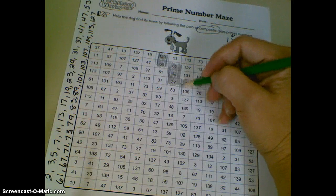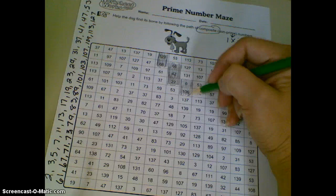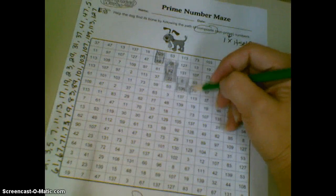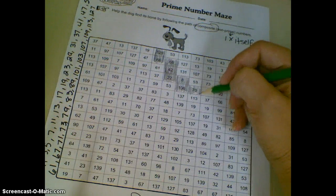106 is an even number, so it's composite. 70 is composite, 7 times 10.